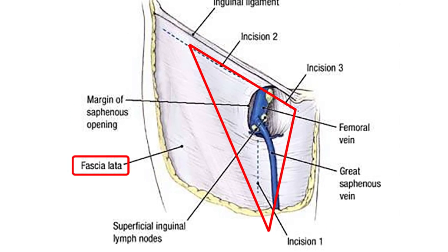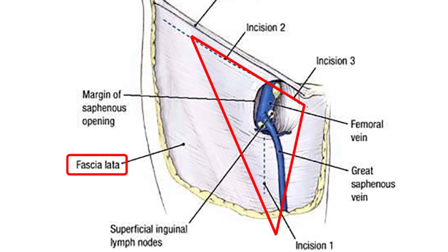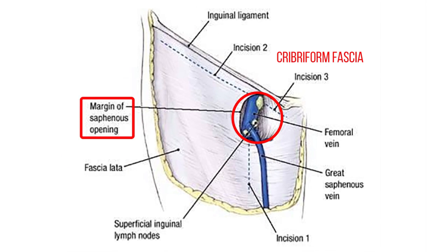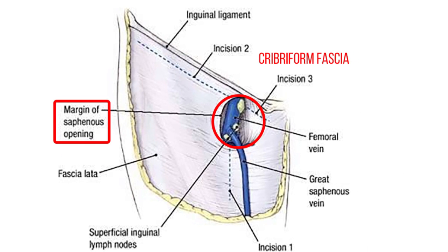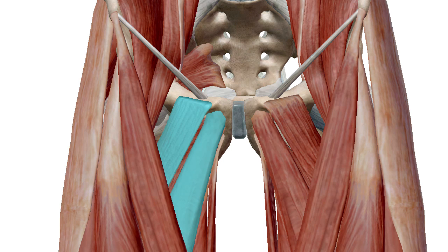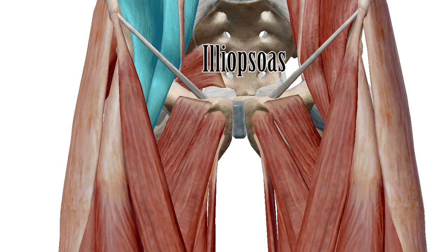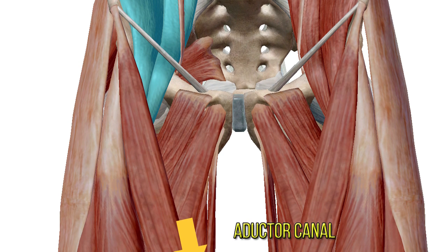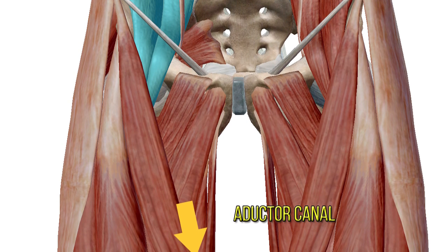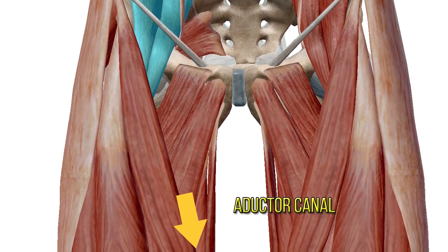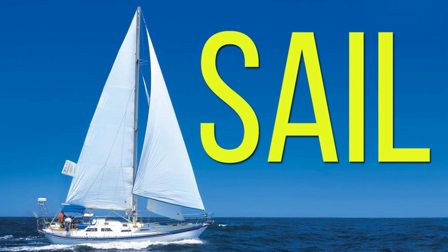The roof of the femoral triangle, located anteriorly, is formed by the fascia lata and at the saphenous opening by the cribiform fascia. The floor, located posteriorly, is formed by the pectineus and adductor longus muscles medially and by the iliopsoas muscle laterally. The apex of the triangle continues into the adductor canal.